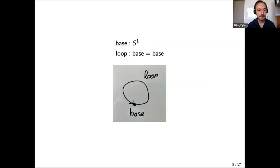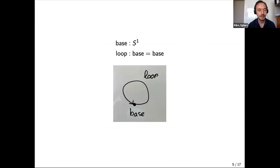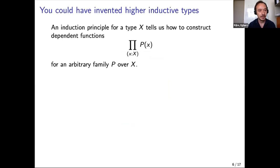The circle is one of the simplest higher inductive types. It has one point constructor — the base point of S1 — and one identification constructor, the loop, which goes from the base to the base. From the picture you immediately see it should be a circle, and we'll see today why it is not contractible, which was a question some of you raised earlier.